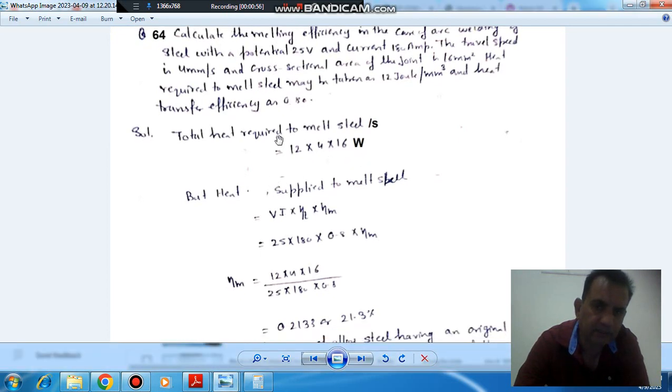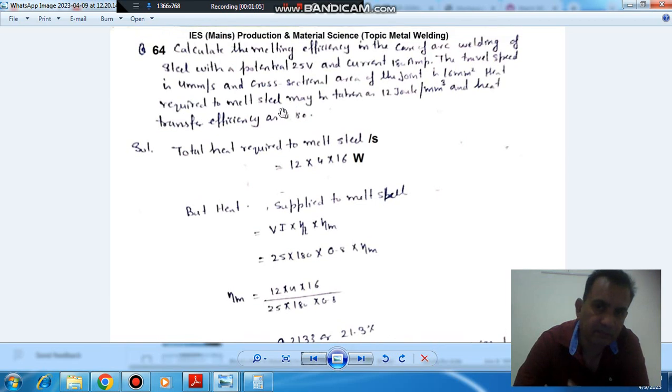The heat supplied to melt steel comes from the source, and its voltage is given as 25 volts and current is given as 180 amperes.